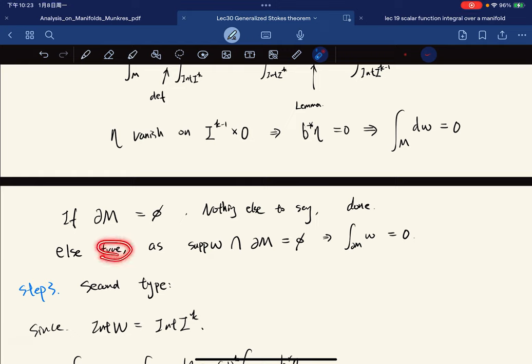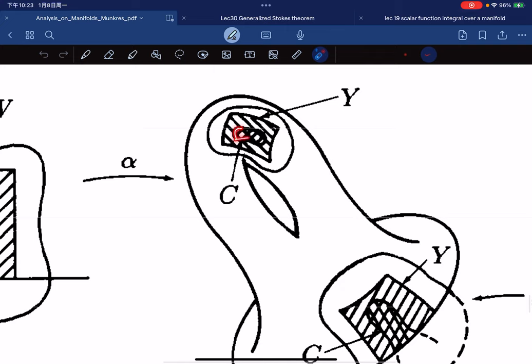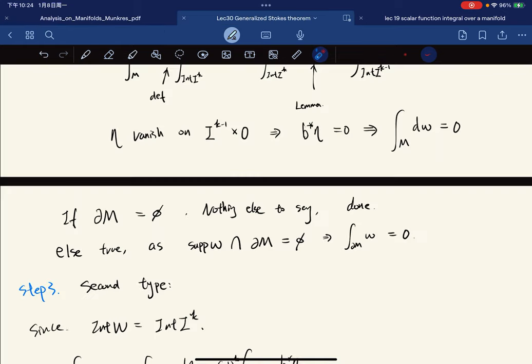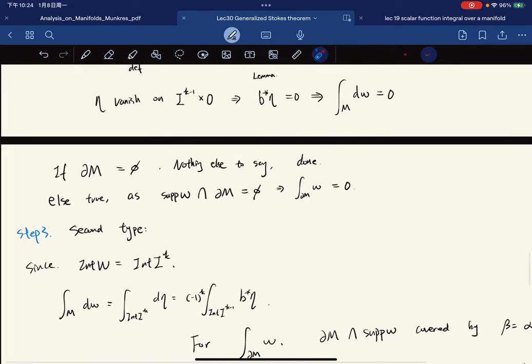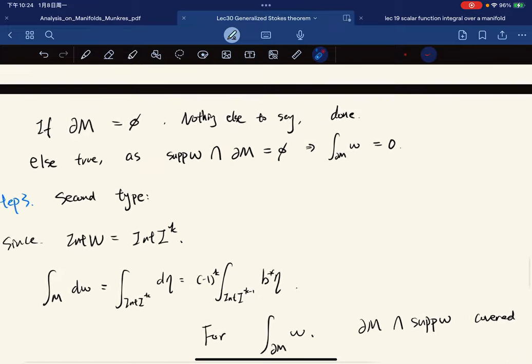Otherwise, it's still true, because the support of omega is empty in intersection with the boundary of the manifold. Here, we just still look at the diagram. All the points in the support of omega are in the interior points. All the points here are interior points. So if we have this, then we can conclude that this is empty, so we have this true.